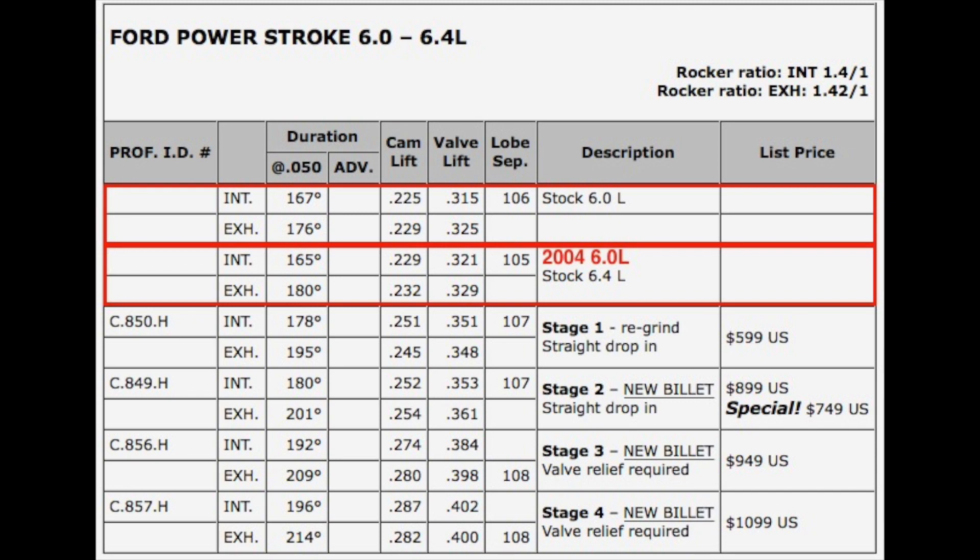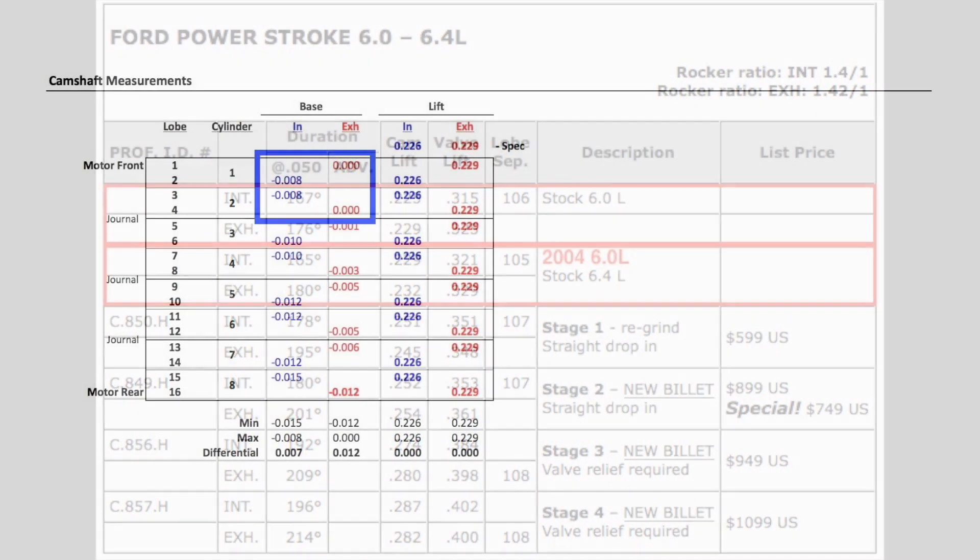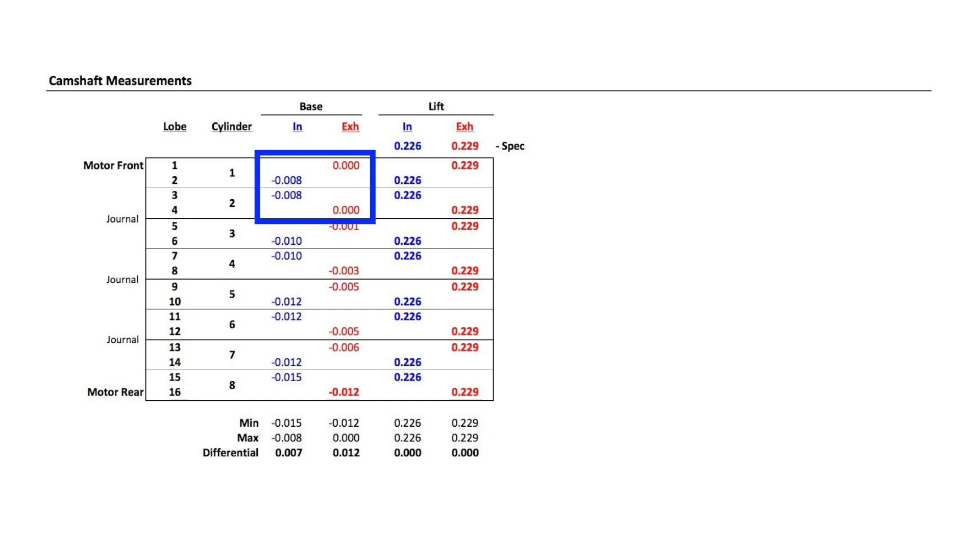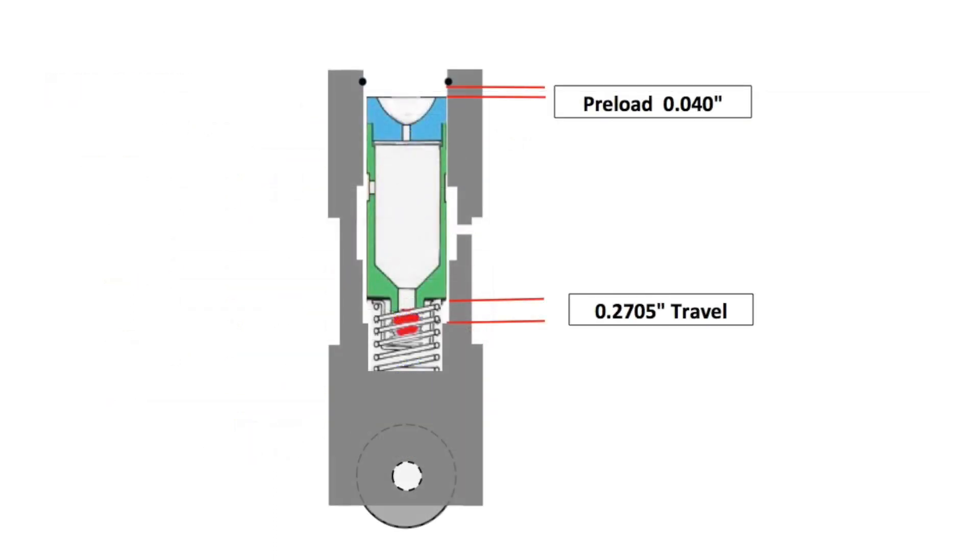Lobe separation is a significant factor in turbodiesel performance. The base circles of intake and exhaust lobes are different from the cam's centerline, and the 8 thousandths difference between them would be taken up by the plunger preload of the lifters.